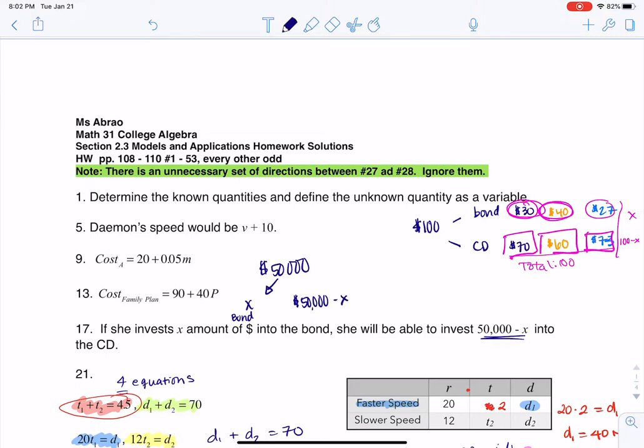And that's where I'm getting this expression, right? Because ultimately, if you think about this, you could say the money that she puts in the bond plus the money that she puts in the CD has to total out to $50,000. So if I put X into the bond, then 50,000 minus X is left over. And I could also get that algebraically by just subtracting X to that side. All right, so there's number 17. Thanks so much. Bye.